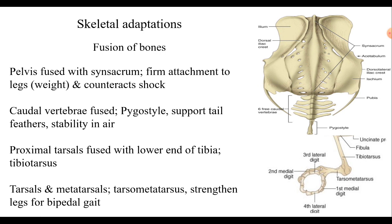The proximal tarsals are fused with the lower end of the tibia, forming a compact compound bone called the tibiotarsus. Below this, the tarsals and metatarsals are also fused to form a compound bone called the tarsometatarsus, which strengthens the legs to bear the body weight and helps in bipedal locomotion.